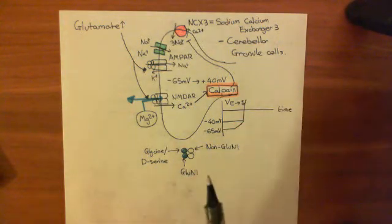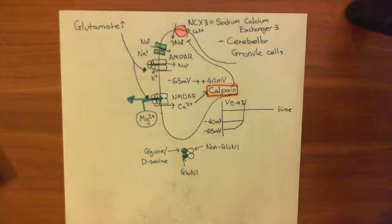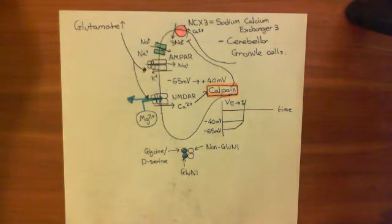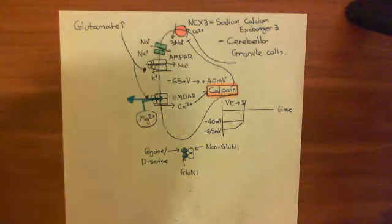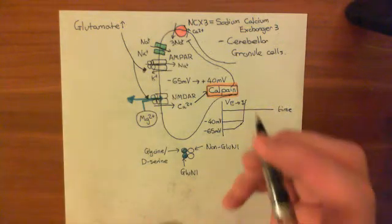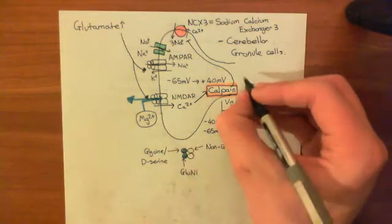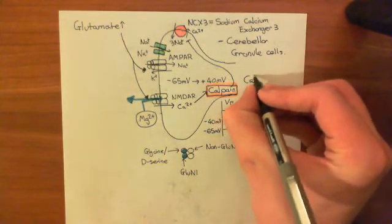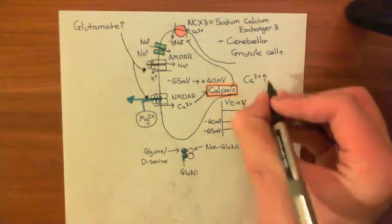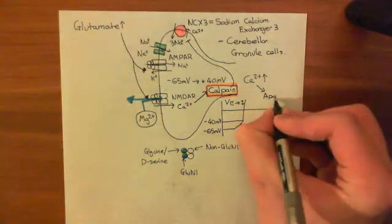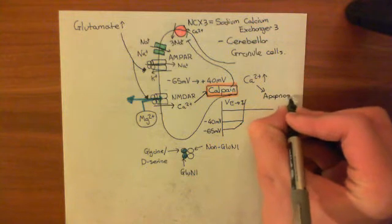So apoptosis is sort of like, it's a cell saying, okay, I need to shut down for the benefit of the larger organism. Whereas necrosis is just basically a cell has lost control, all control, and is just dying. All biochemical pathways are collapsing. So at too high calcium levels, so this is going to cause calcium to go completely out of control, and that leads to apoptosis or necrosis. It causes neuron death.